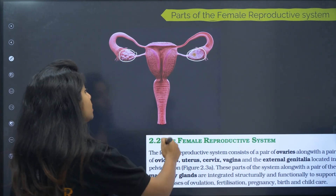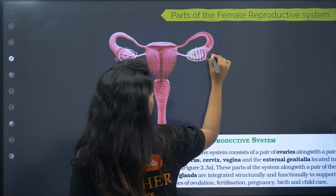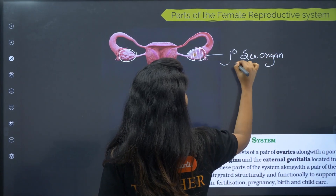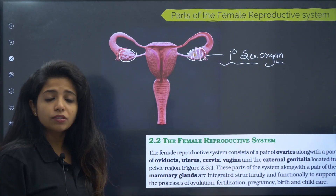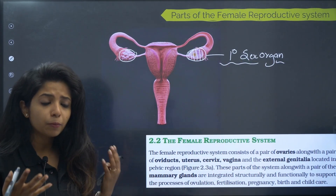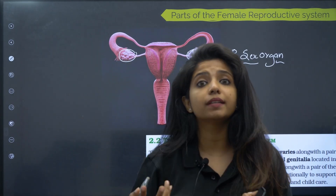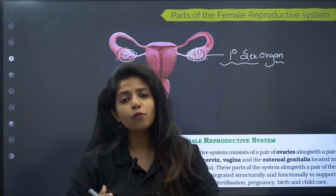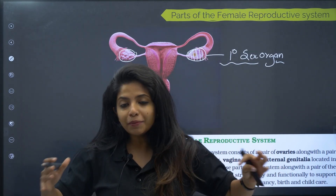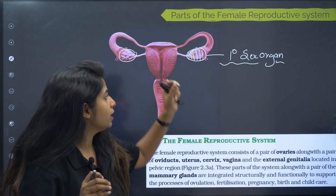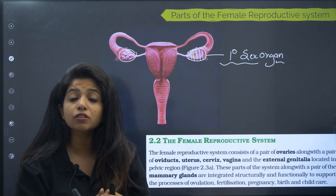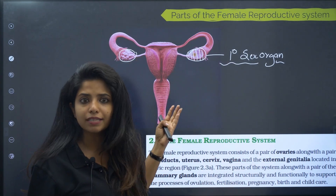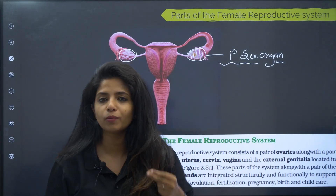This is the primary sex organ. Why do I call something a primary sex organ? Because it does the primary function of the reproductive system, which is to produce gametes. If gametes are not there, there will be no fusion to form a zygote, no embryo — the human race itself would stop. So this is the primary sex organ, responsible for production of female gametes. The female gamete is the oocyte or ovum.